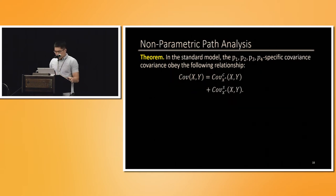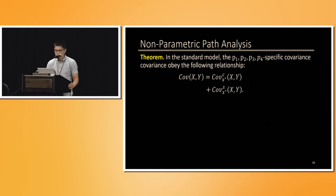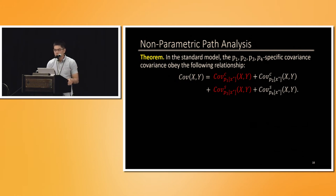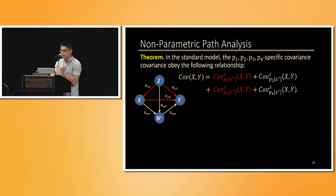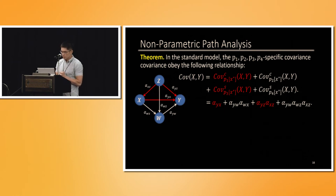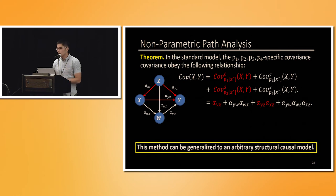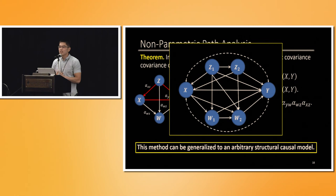Together, these results provide a nonparametric decomposition for the observed covariance COV(X,Y). Starting from the coarse two-way decomposition, we replace the causal covariance with its path-specific decomposition and similarly for the spurious covariance. The resulting equation is the nonparametric decomposition for COV(X,Y) in the COMPAS model. In the linear model, this nonparametric decomposition coincides with Wright's method of path coefficients. The method presented so far can be generalized to handle arbitrary structural causal models — please check the paper or visit our poster for details.